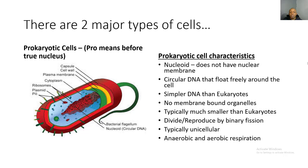Let's look at the characteristics of a prokaryotic cell. They have a nucleoid which does not have a nuclear membrane, and they have circular DNA that floats freely around the cell. Their DNA is not contained inside a nucleus and is simpler than eukaryotes. They have no membrane-bound organelles, so their organelles don't have a membrane surrounding or protecting them.